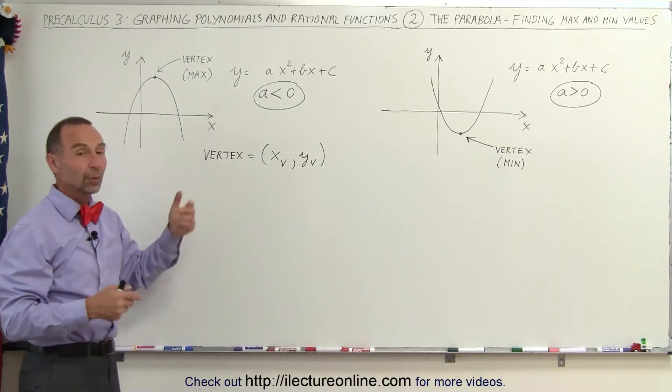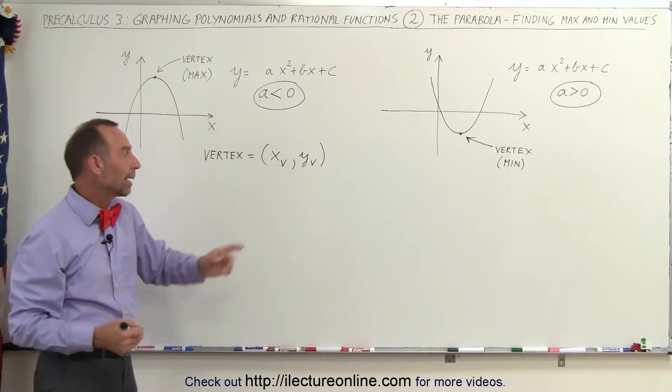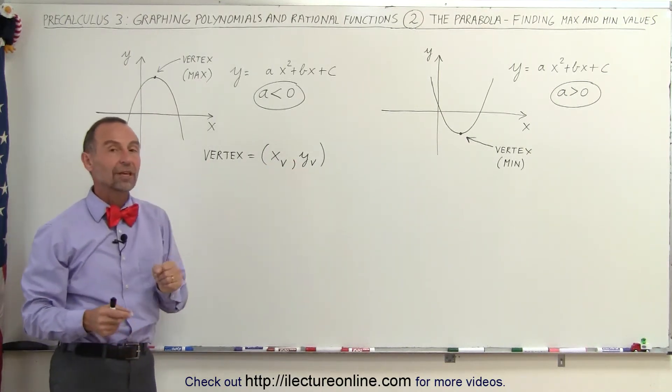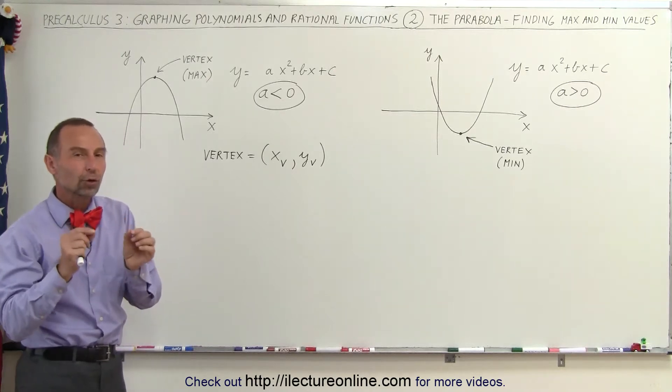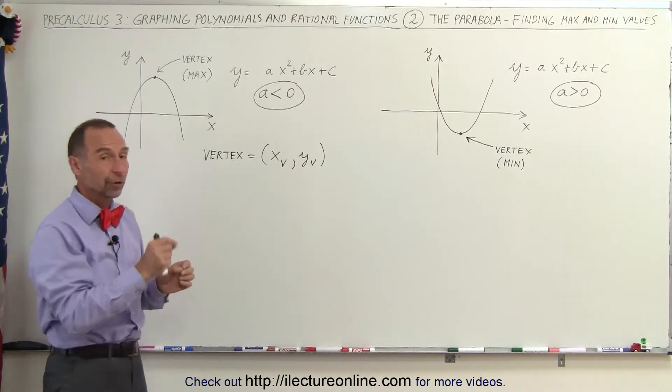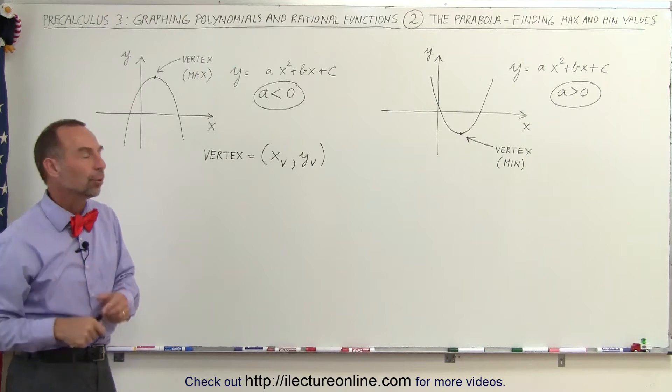Notice that the vertex will have a coordinate x and y, and so we denote that by x sub v and y sub v. So x sub v and y sub v are the coordinates of that particular point of vertex indicating either the maximum or the minimum value.